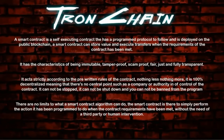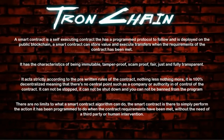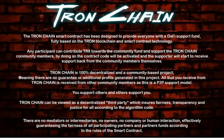There is no central point such as a company or authority in control of this contract. It cannot be stopped, shut down, or banned. There are no limits to what a smart contract algorithm can do. The smart contract simply performs the action it has been programmed to do when requirements have been met, without the need of a third party or any human intervention.